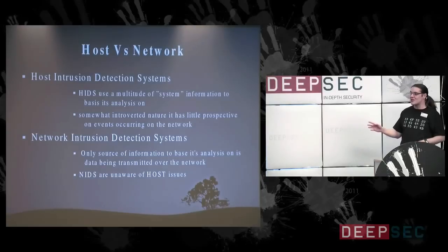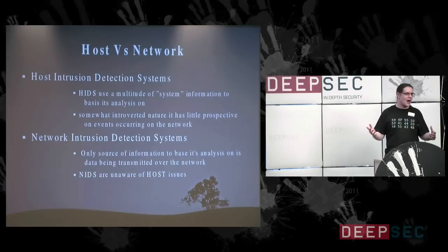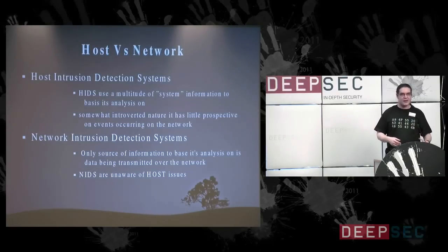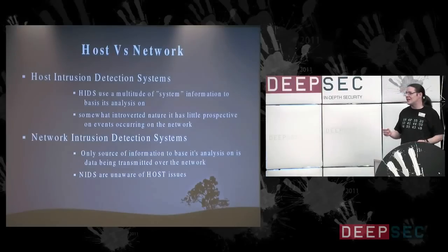A network intrusion box — the only information a NIDS can go for is raw data on the wire, which gives it a really good perspective about what's happening on the network, but it's not really capable of telling anyone what's happening on a host. But they are the lifeblood of most corporate networks and they fulfill compliance.